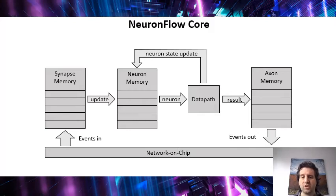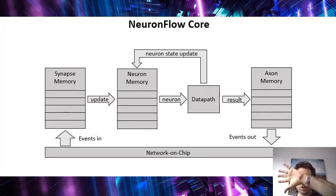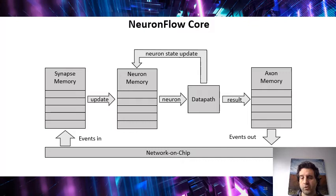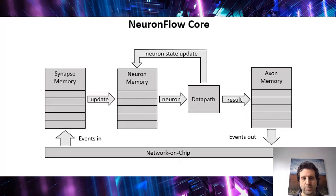It goes to a synapse memory that checks all the neurons that are stored in this particular core that need to be updated — the ones that are connected to this event. So you receive a value, and when the value is received you check all the connections of neurons for that event. You update all of these neurons by calculating their new states and writing back the state of each one. And for each one you also check if they go above their threshold for activation. If they do, this results in a value that is sent to an axon memory that checks which other cores these values have to be sent to for processing by the next layer. This is essentially the basic architecture of a NeuronFlow core.